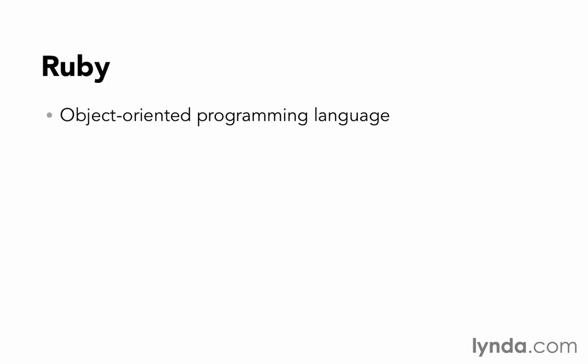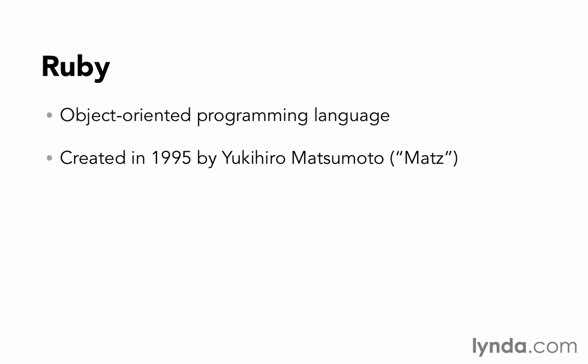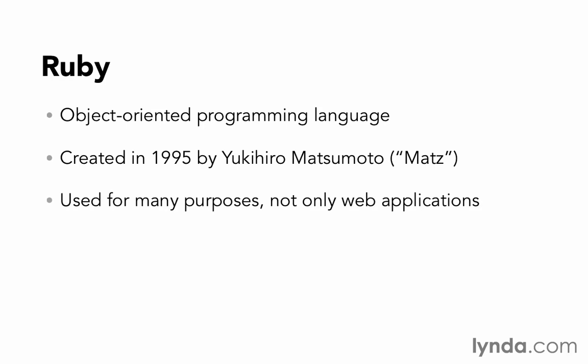So what is Ruby? Ruby is an object-oriented programming language. It was created in 1995 by Yukihiro Matsumoto, who often goes by the nickname Matz. Ruby can be used for many purposes, not just for web applications — it's just a general programming language. In fact, on lynda.com, we offer Ruby Essential Training, which is training for the Ruby programming language.